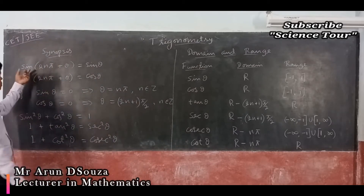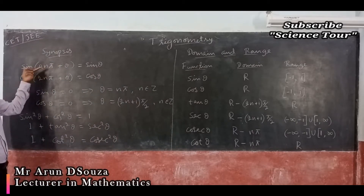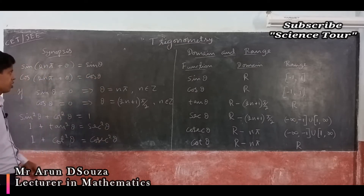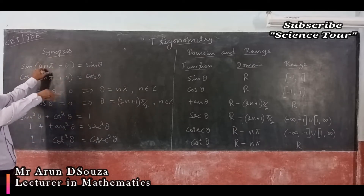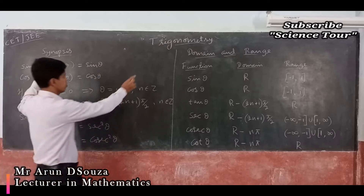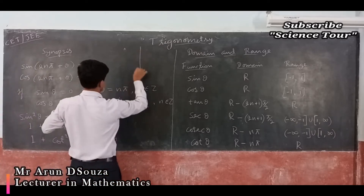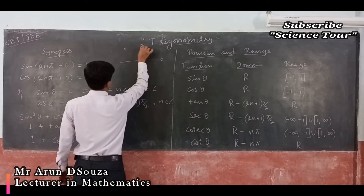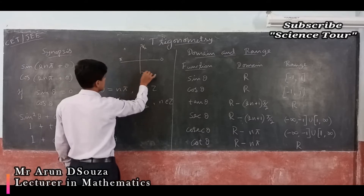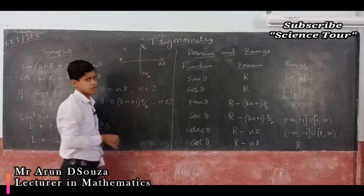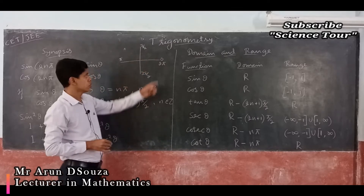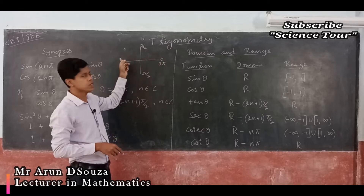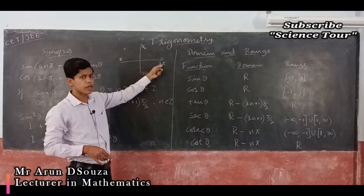The first formula is the periodicity of trigonometric functions. For every one full rotation, you will repeat the values. At 90°, 180°, 270°, and 360°, you come back. So, sin 0 = 0, sin π = 0, and when you come to sin 2π, that is also 0.